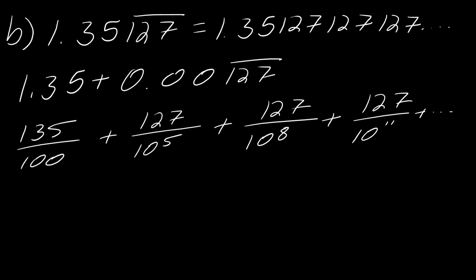I can use that same trick I used in the last problem. So this 135 over 100 is just hanging out. What can I factor out of all of these here? I can factor out the 127 to the 10 to the fifth. So I've got 127 over 10 to the fifth.